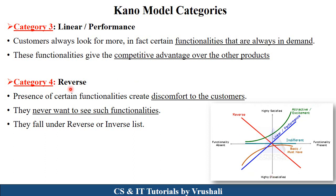The next category is reverse. Reverse means a particular functionality the customer never wanted, but still the developer adds it, which causes discomfort to the customer. For example, the customer didn't want a video call feature, but the developer added it — this is a reverse feature, and the customer is dissatisfied. If the functionality is present but the customer didn't want it, they are highly dissatisfied. When the developer removes those functionalities, then the customer is satisfied.